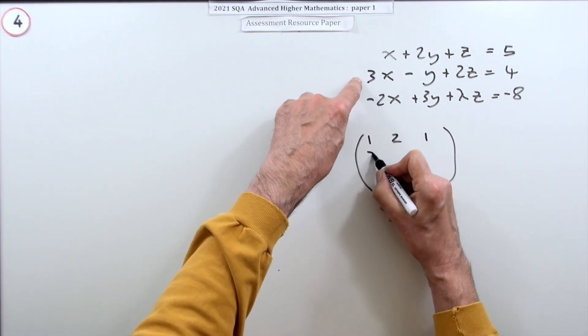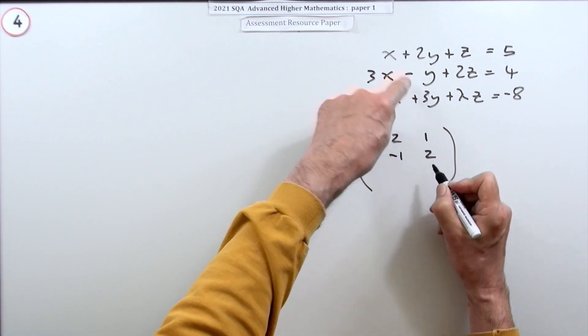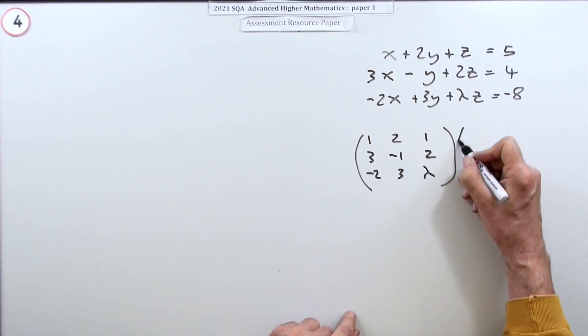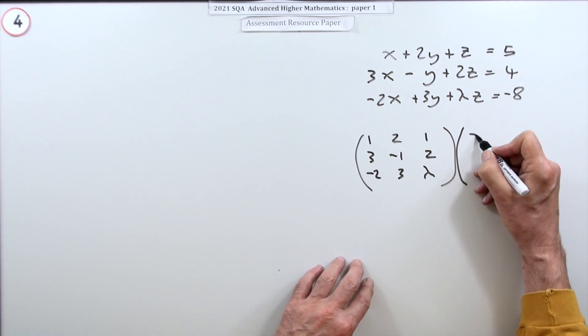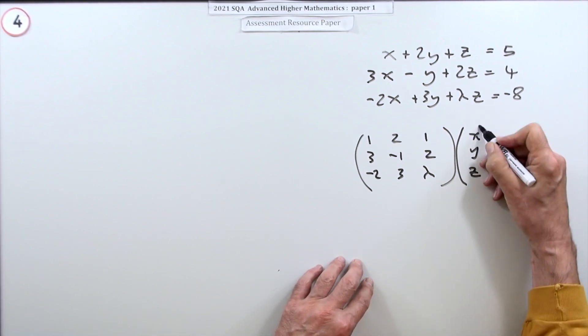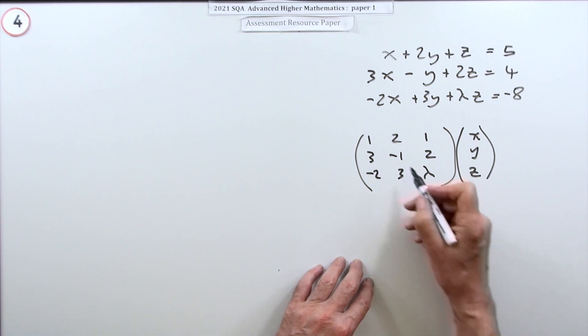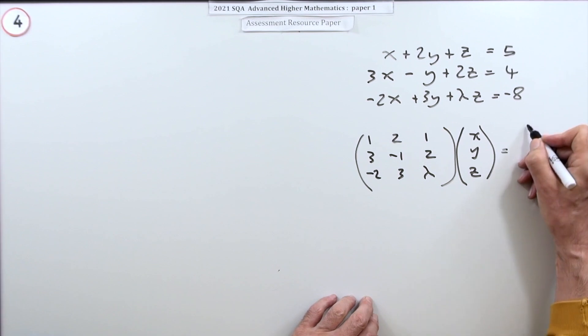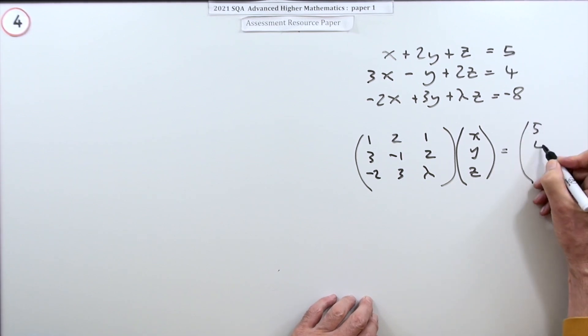One, two, one, three, negative one, two, negative two, three, and a lambda. Multiplying that by the variable x, y, z. This is a little column matrix because if you multiply this out using the rules for matrix multiplication, you just end up with this and that would give you this result.